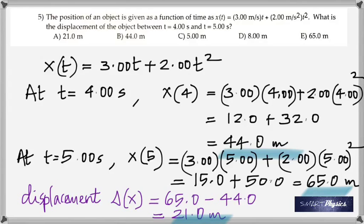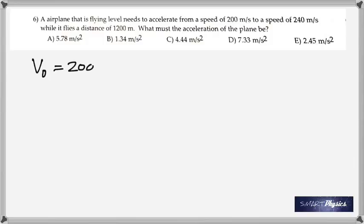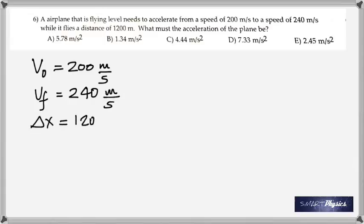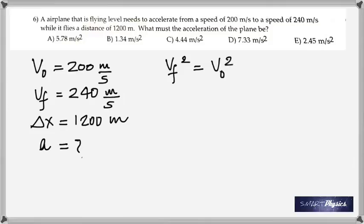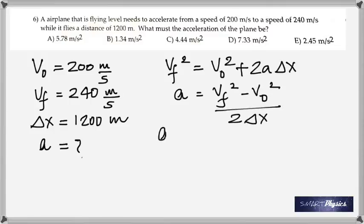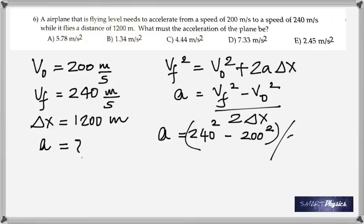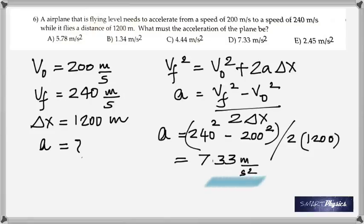Number 6: an airplane has initial speed 200 m/s, final speed 240 m/s, and Δx = 1200 meters. Find acceleration. The equation is vf² = v₀² + 2aΔx. Make a the subject, plug in the numbers, and you get a = 7.33 m/s².